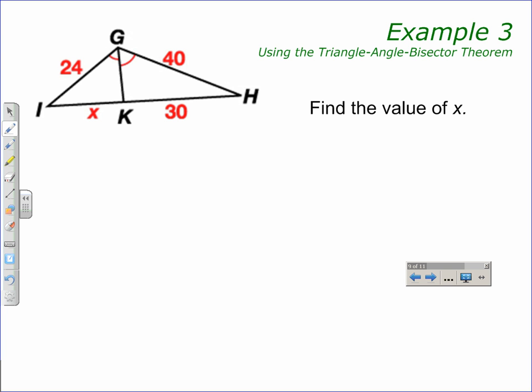Using the triangle angle bisector theorem. Remember, the triangle angle bisector theorem says if a ray bisects an angle of a triangle, then it divides the opposite side into two segments that are proportional to the other two sides of the triangle.